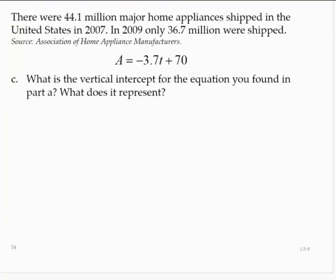What is the vertical intercept telling us? All right. So the vertical intercept, letting t equal 0, then we would have A is equal to negative 3.7 times 0 plus 70. So A would equal 70.